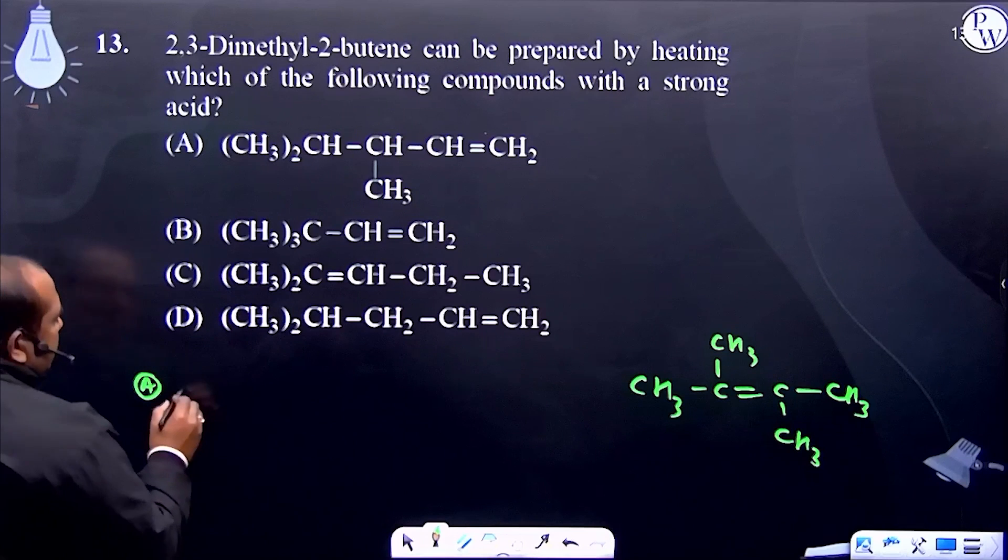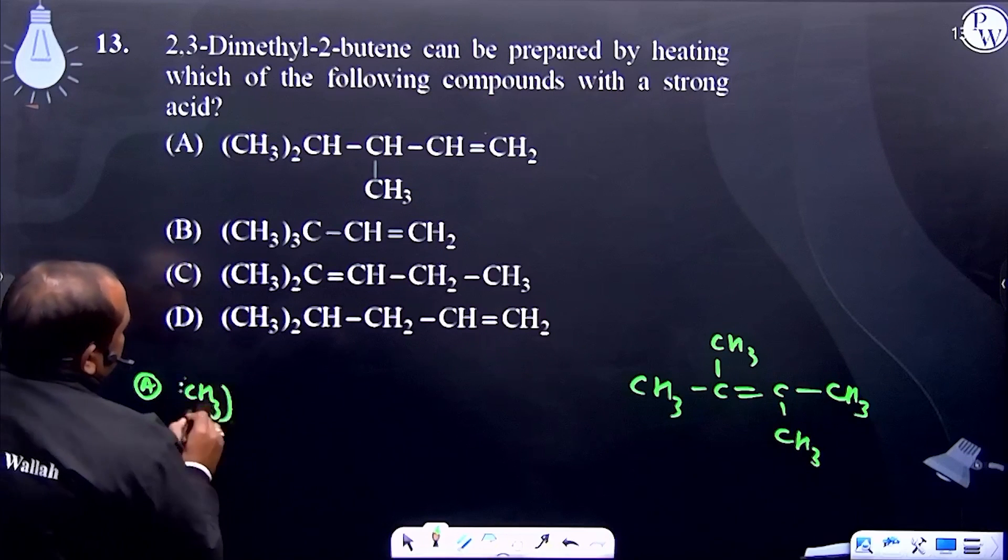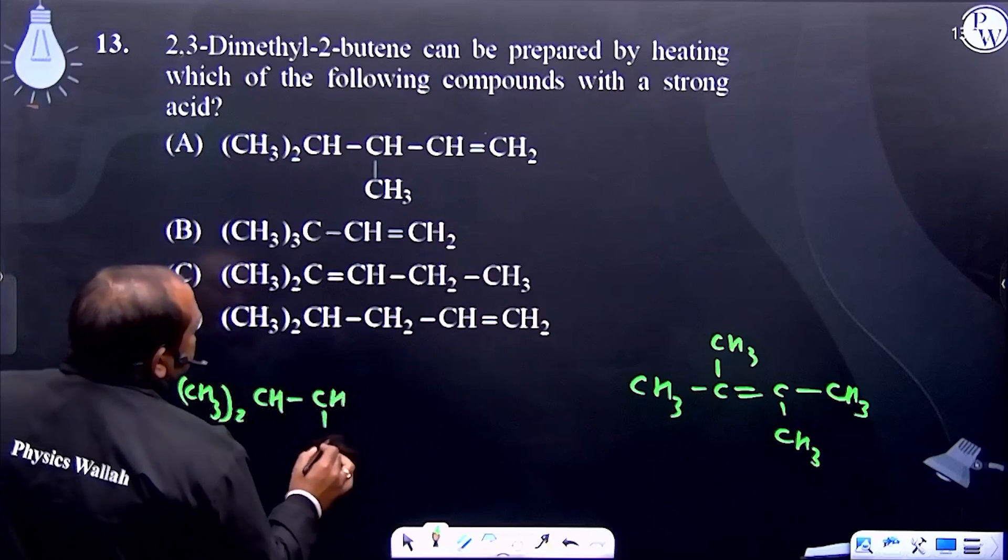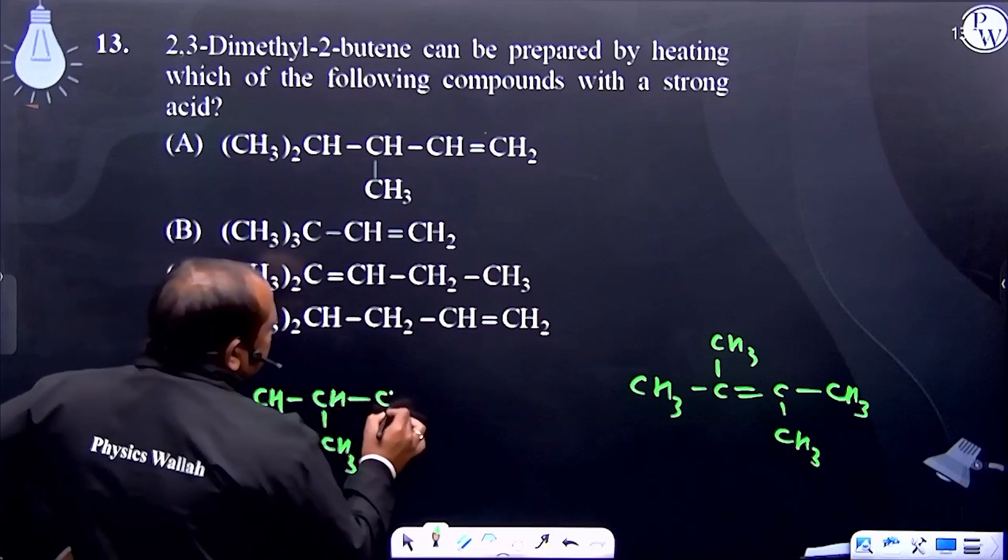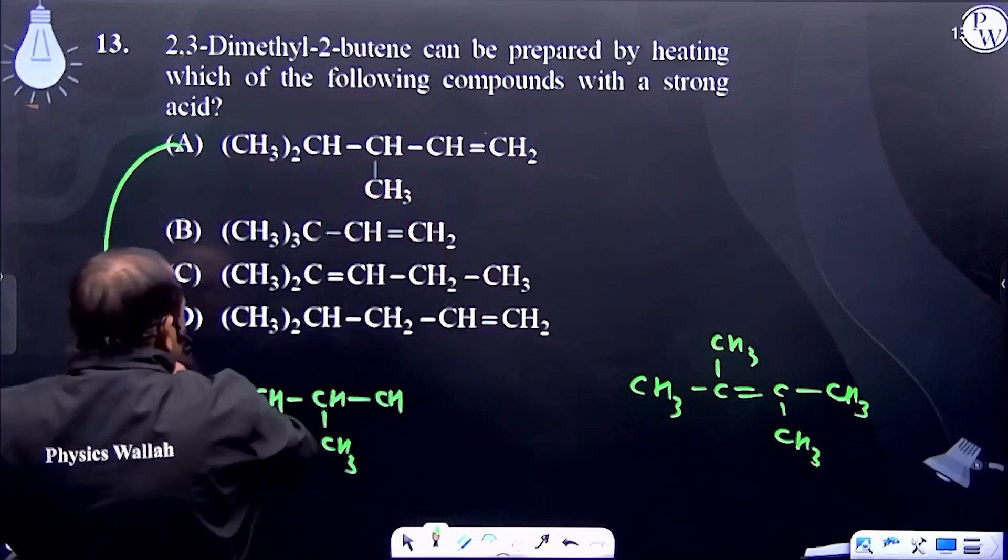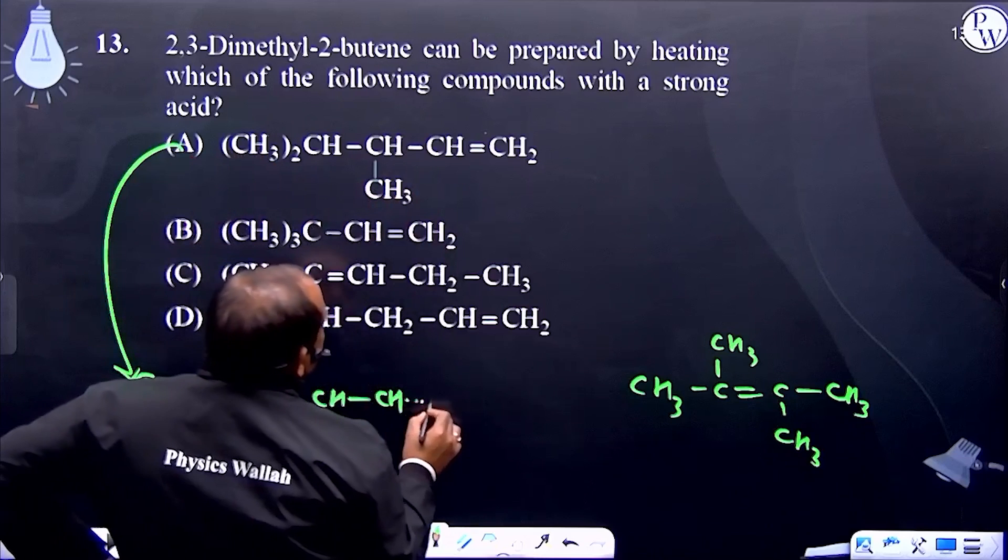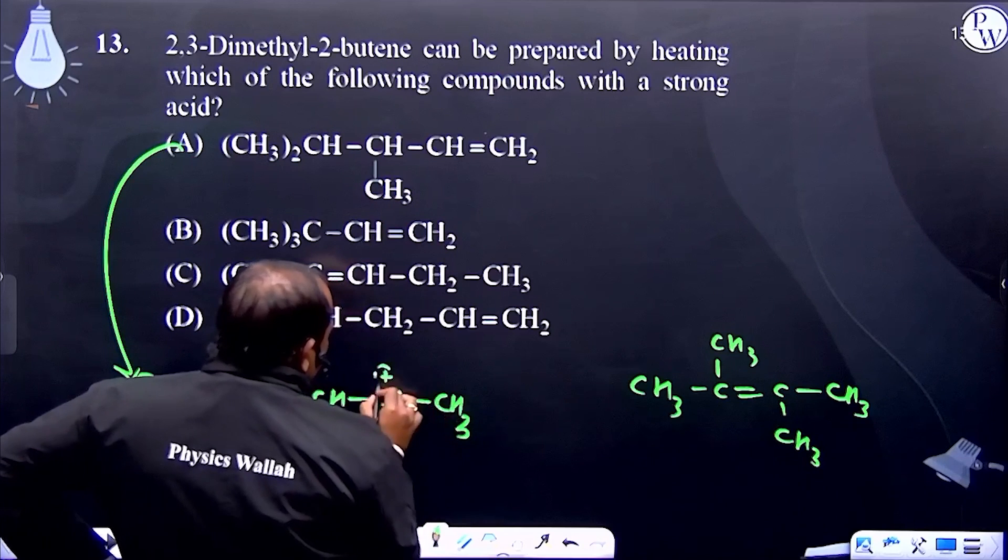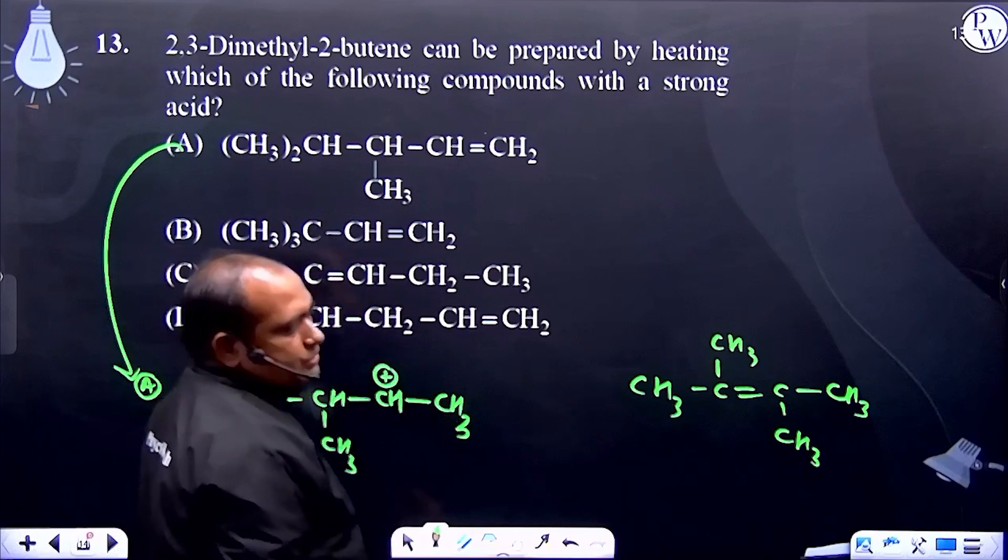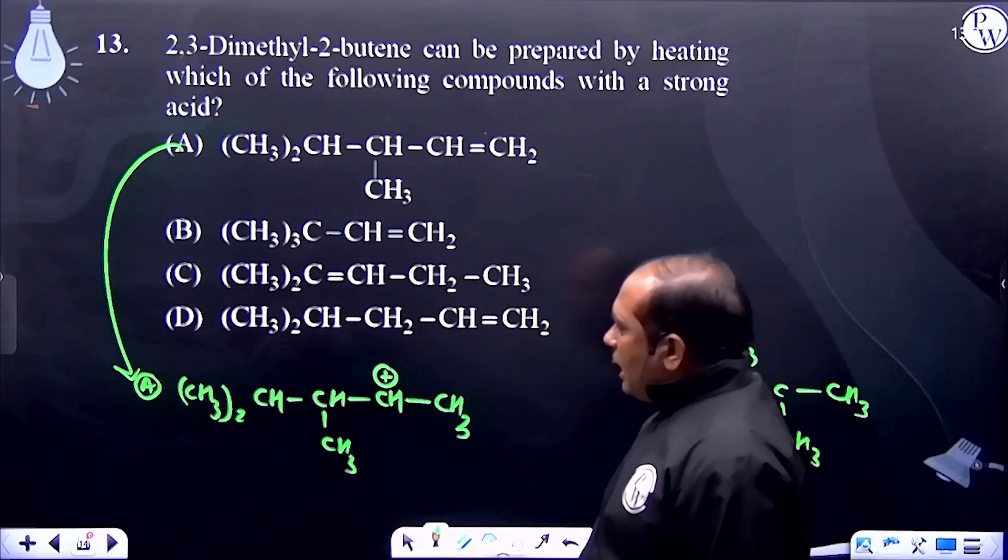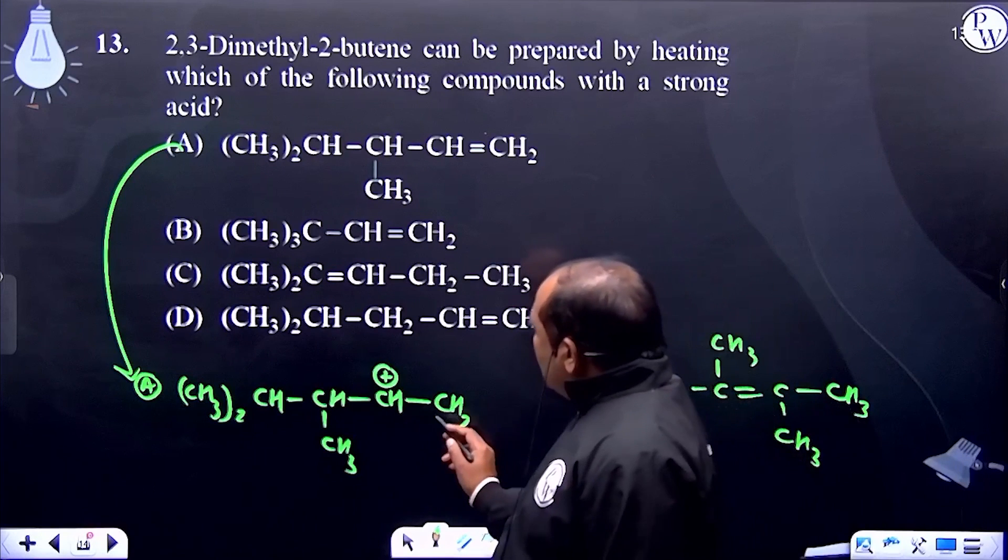Checking one by one. Option A: (CH3)2C=CH-CH=CH2. First it reacts with acid. First addition takes place - carbocation formation.